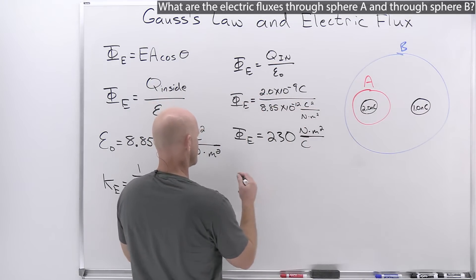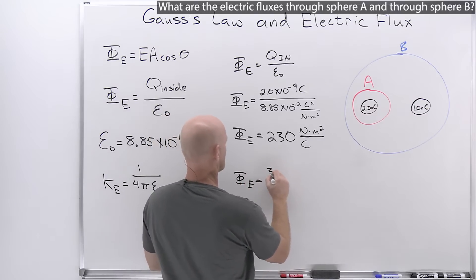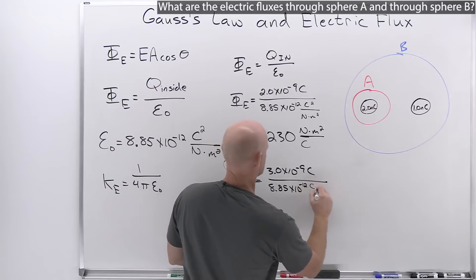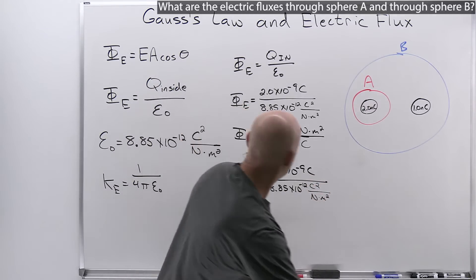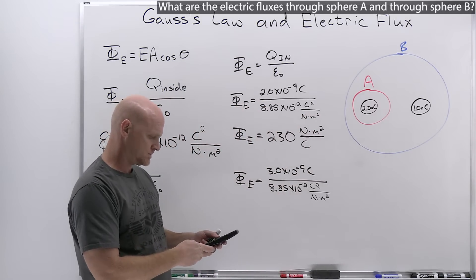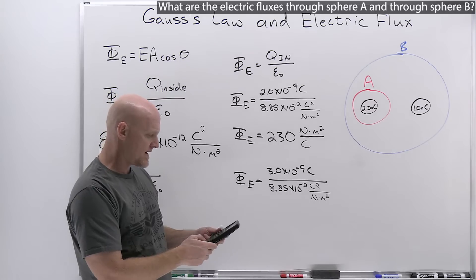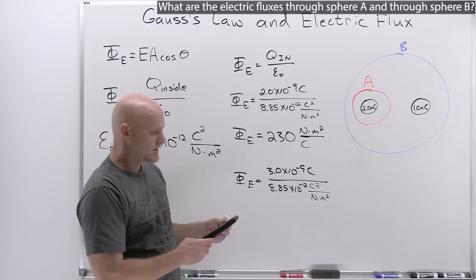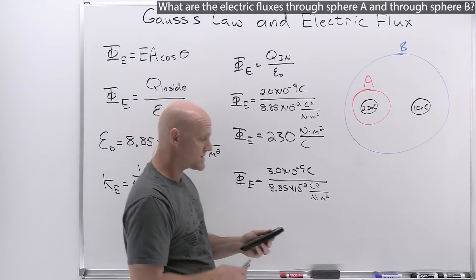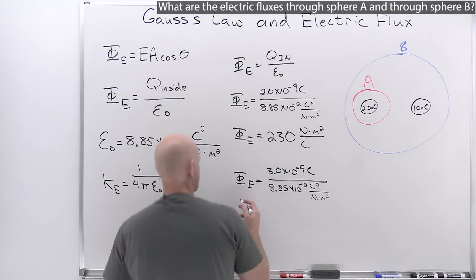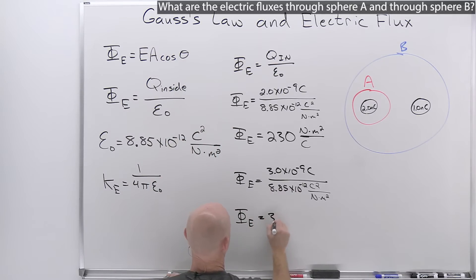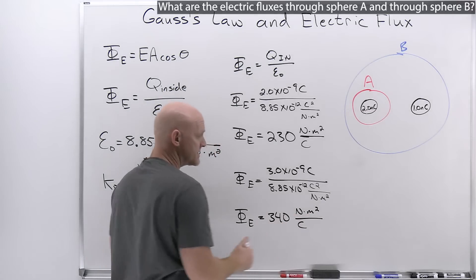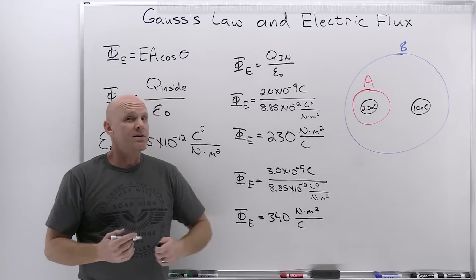For sphere B, the electric flux equals 3.0 × 10⁻⁹ C over epsilon naught. The calculation gives 338.98, which rounds to 340 N·m²/C to two significant figures — exactly 50% larger than the result for sphere A, as expected since the total enclosed charge is 50% larger.